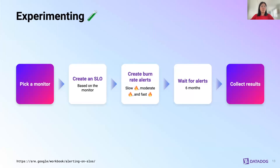In our experiment, we picked an existing monitor — a simple threshold alert that triggers on one of our service's error rates. We then created an SLO and a target that we believe reflects the impact of this existing monitor. We then created multiple burn rate alerts using the multi-window method described in the Google SRE book — specifically three alerts: one for a slow burn rate, a moderate burn rate, and a fast burn rate. We waited six months for these alerts to get triggered, then took all the pages and categorized them by what caused them, what manual action was taken, the duration of the problem, and which burn rate alert fired alongside the simple threshold alert.